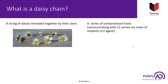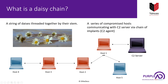To help you understand this, I have a simple diagram. Here is a C2 server and this is our first compromised target. This target is talking to our command and control software using a C2 agent or implant installed onto it. As we move across the network and compromise additional hosts, we can either directly let them talk to our command and control server.